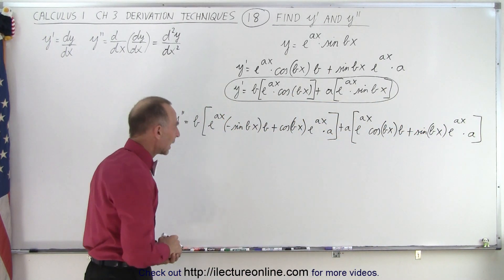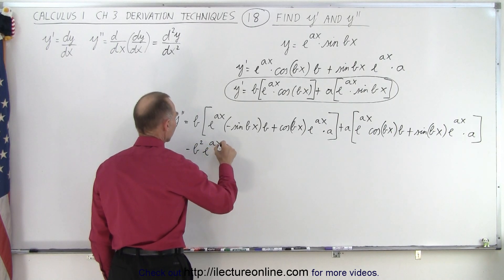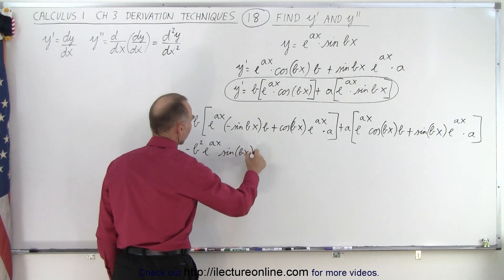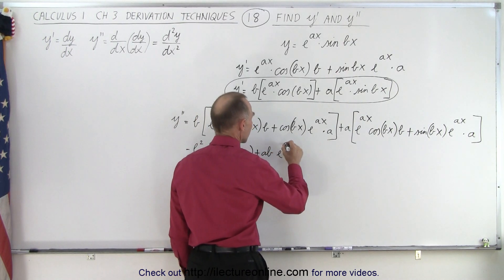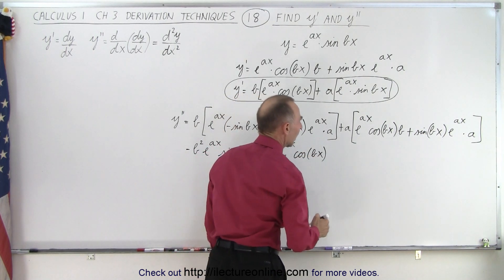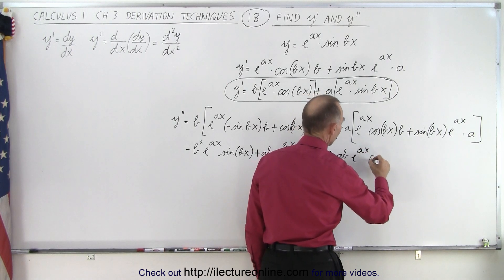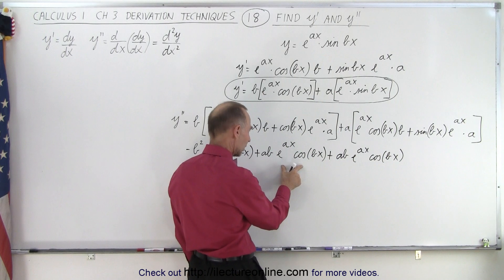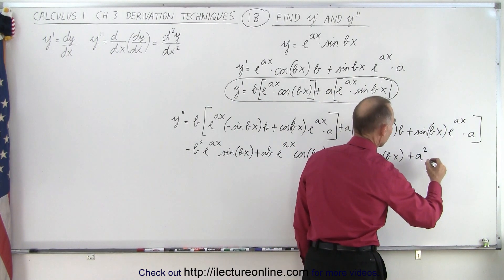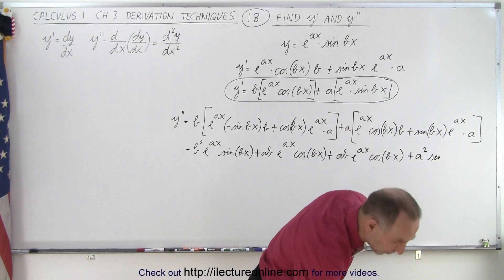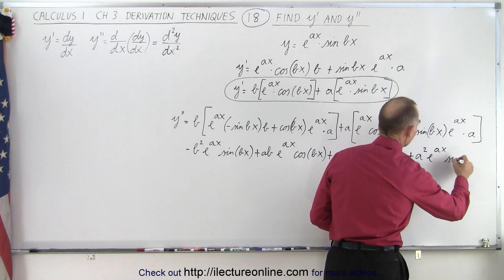Now we just need to clean that up algebraically. We have b times b and a negative sign, so we have minus b squared times e to the ax times the sine of bx. Then here we have b times a, so we have plus ab times e to the ax times the cosine of bx. And finally we have a times a, so we have plus a squared times e to the ax times the sine of bx.